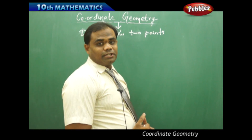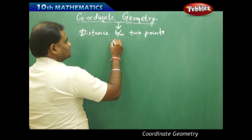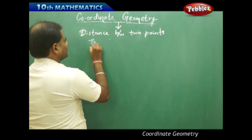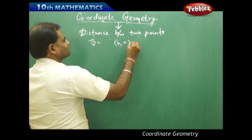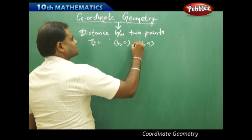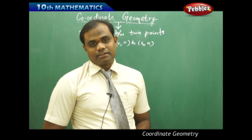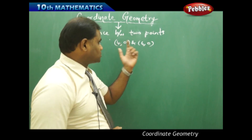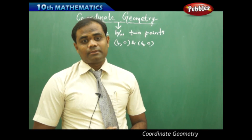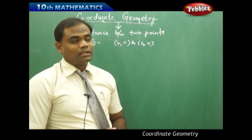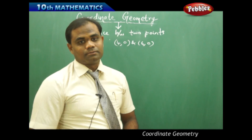Let me initially take two points. For example, I want to find the distance between the points (4, 0) and (6, 0). These are the two points. Initially, I would like to plot them on the xy coordinate system and then identify the distance. So first, let me plot these two points.